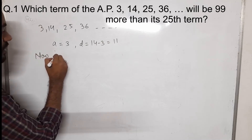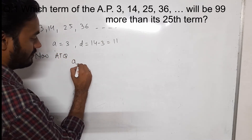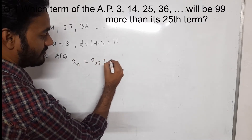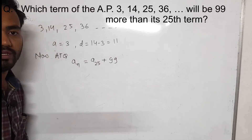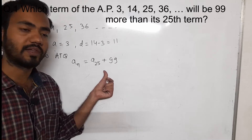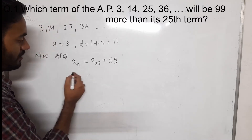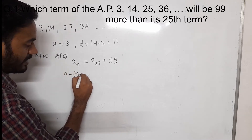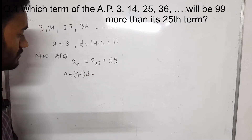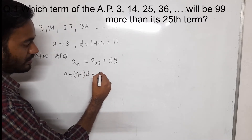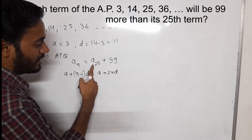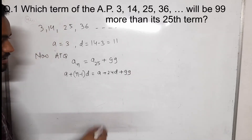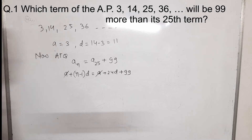Now, according to the question, the term which we have to find — if we put the formula of N here — it will be A plus (N minus 1) into D, that is equal to A plus 24D (the 25th term), plus 99. Here A and A get cancelled by each other.